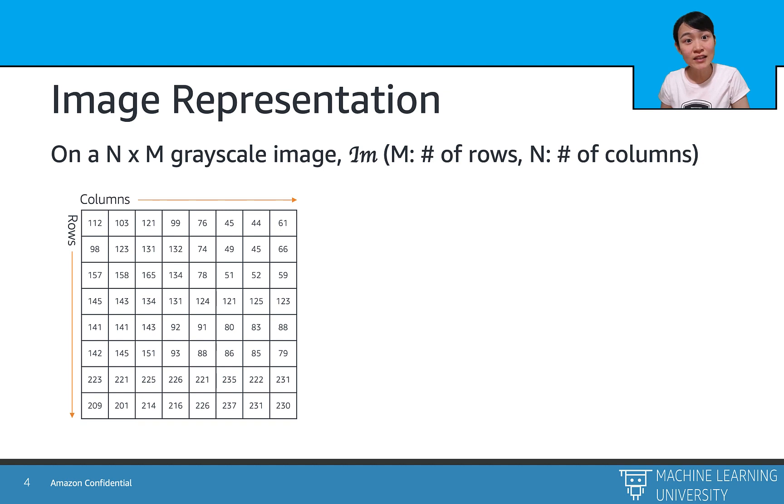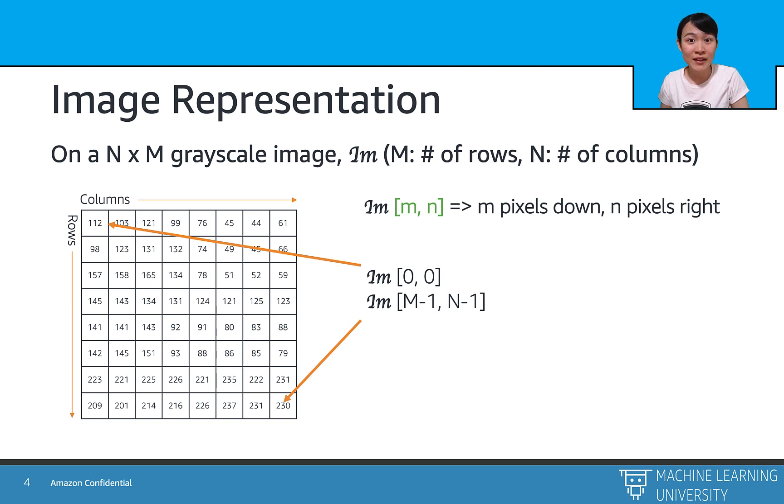Here is an example of a grayscale image with size n by m. We can extract each pixel's value by its row index, i, and its column index, j. As we can see, the top left corner of the image can be referenced by i_m[0, 0], while the bottom right corner can be referenced by i_m[n-1, m-1].